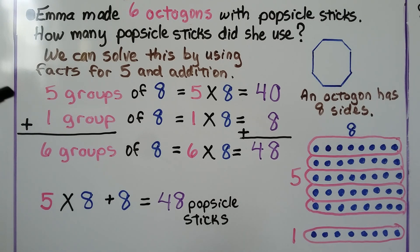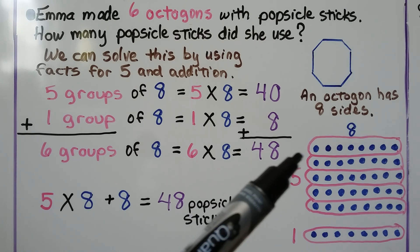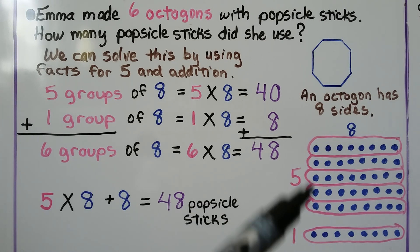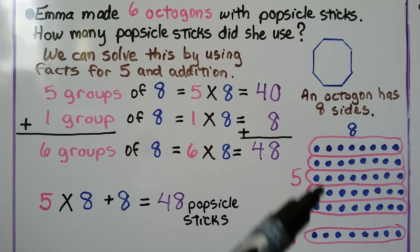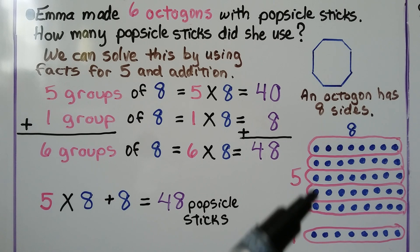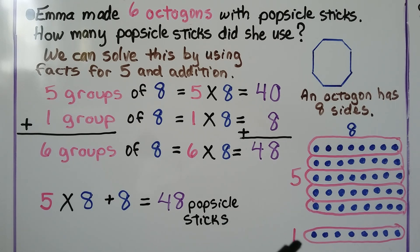We used 5 groups of 8 and then added another group of 8. We found that 5 groups of 8 was 40, then we added another group of 8 to have 6 groups of 8, and that was 48. So 5 times 8 plus 8 is equal to 48 popsicle sticks.